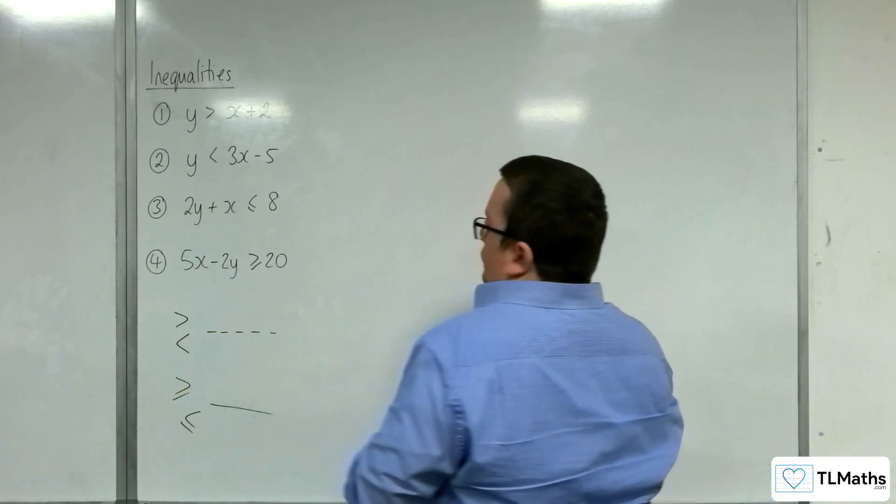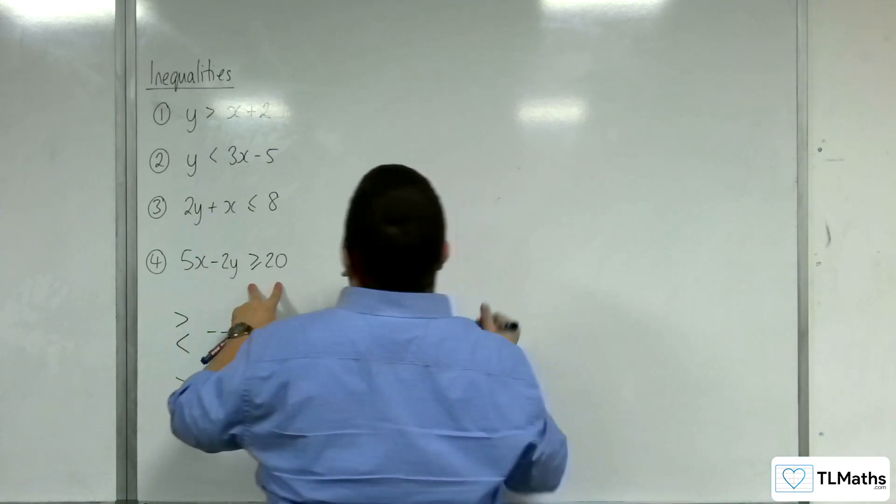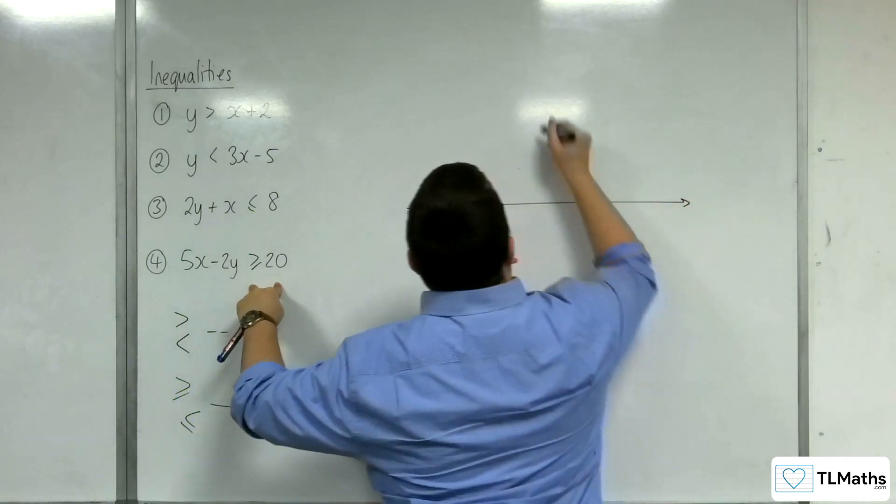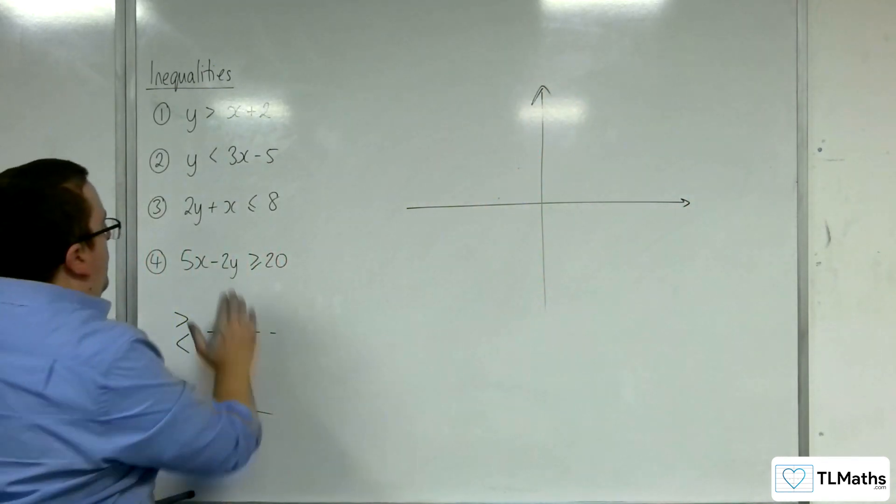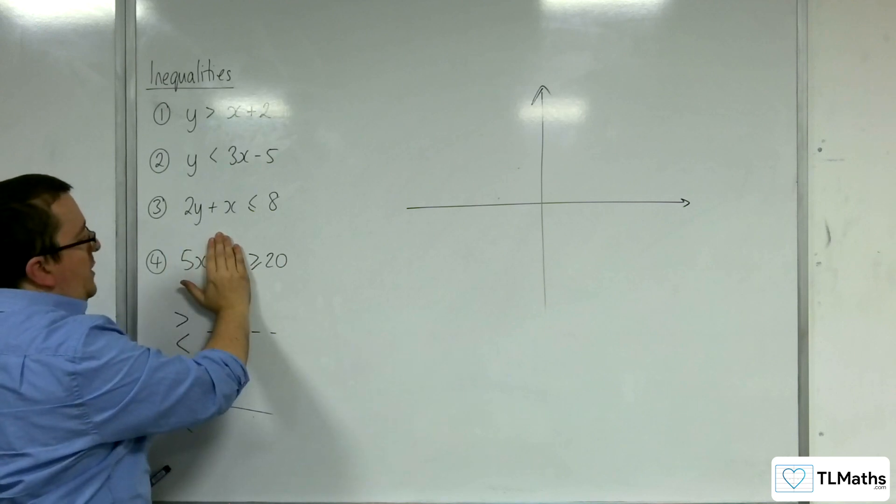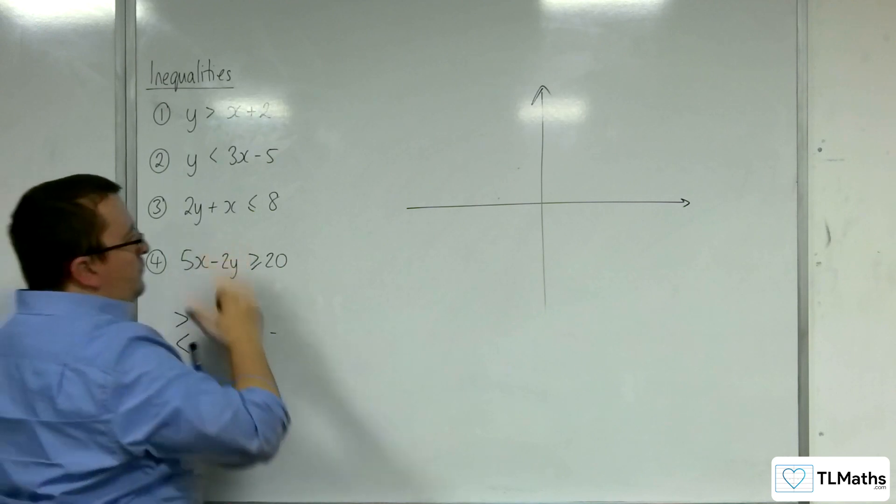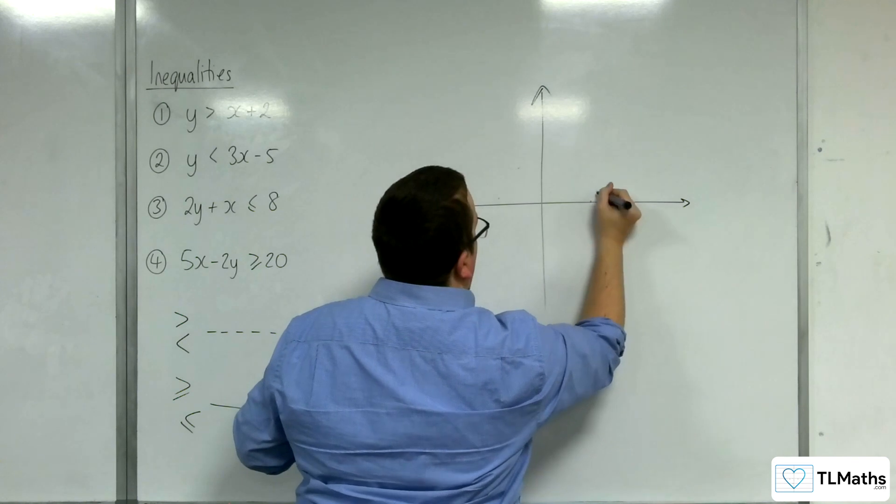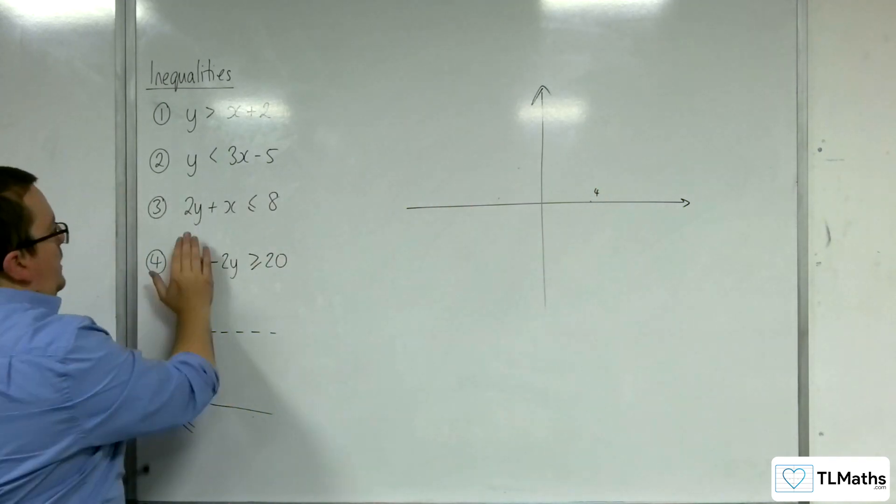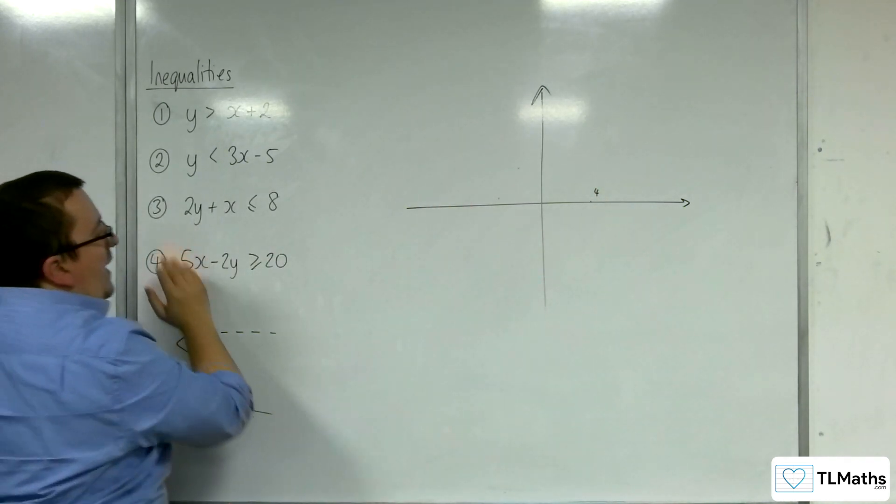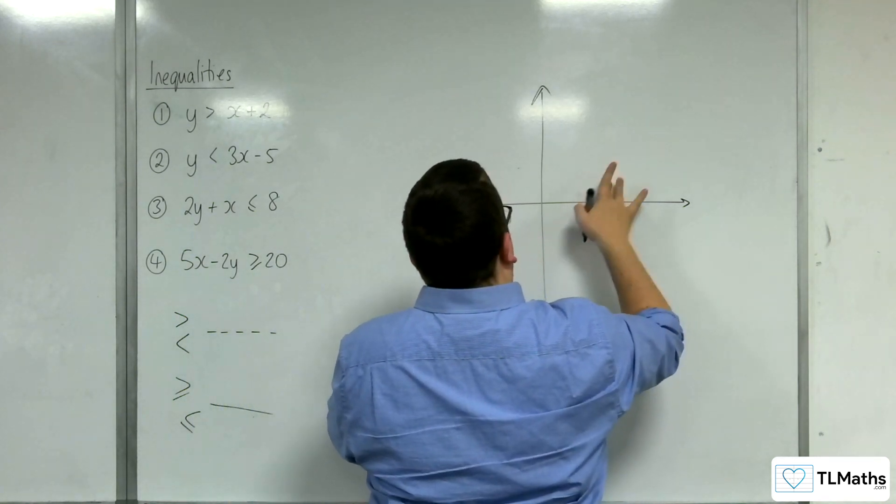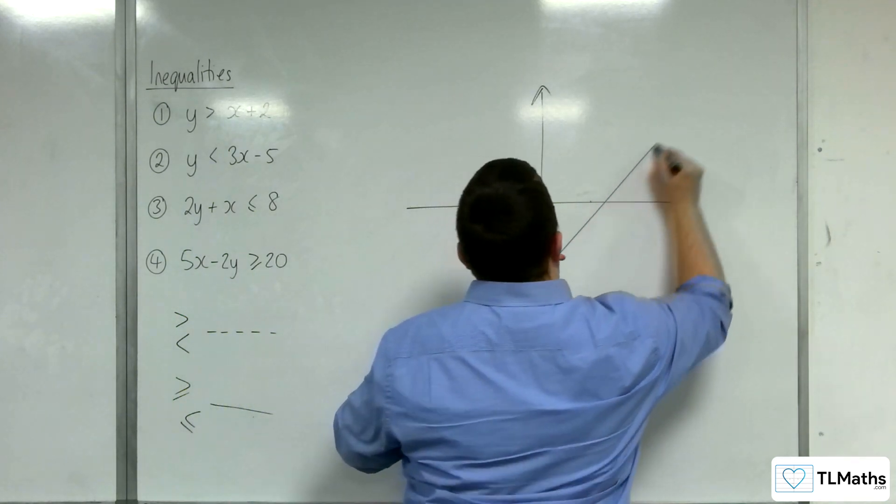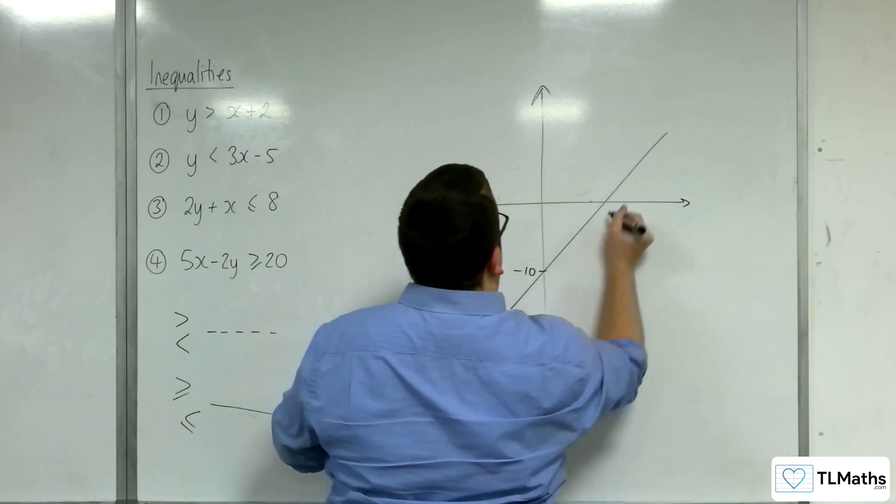Right. Number 4. 5X take away 2Y is going to equal to 20. So, when Y is 0, we get 4. And when X is 0, we get minus 10. So, it's something down like that. So, something like that. So, that's minus 10 and that was 4.